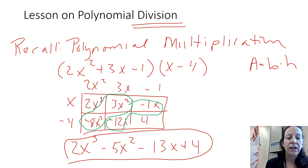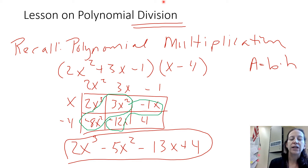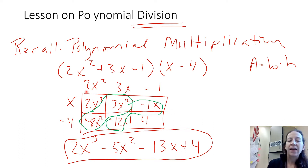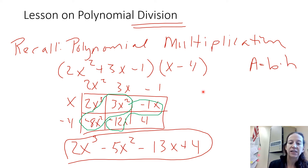Notice the pattern with the like terms on the diagonals, because what we're going to do today with division is go backwards. We're going to start with one of the factors and what we know the area is, then go backwards and find the other dimension. That's essentially division.